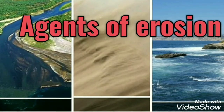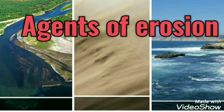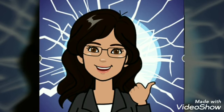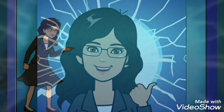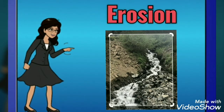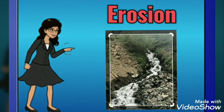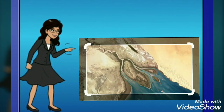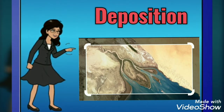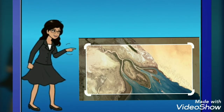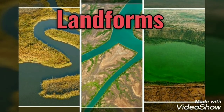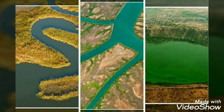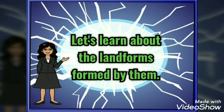In this chapter, you are going to study about all these agents in detail. Now let's see what happens after erosion. The upper layer of the rocks is removed by the process of erosion, and these eroded materials are deposited somewhere. This process is known as deposition. Thus, different landforms are created by the agents of erosion and deposition.